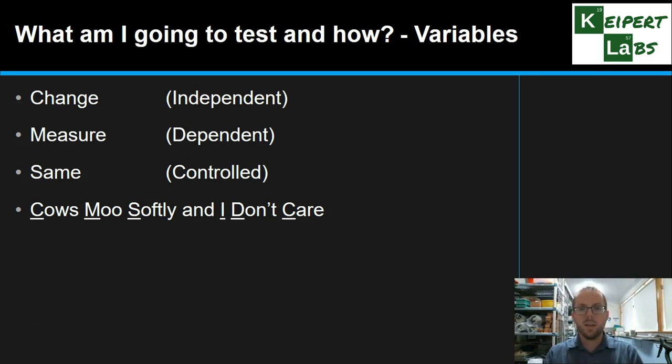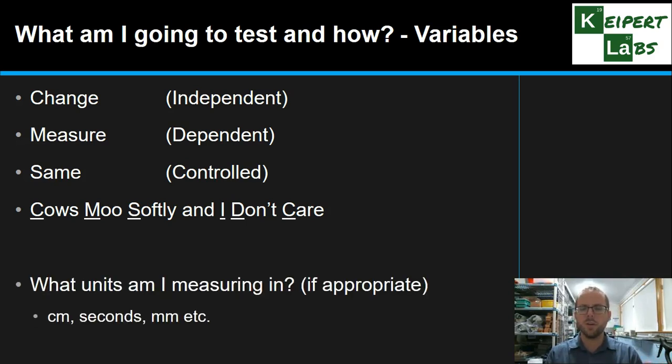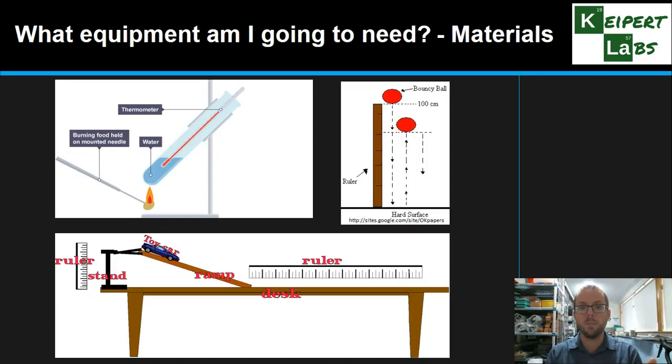And then when we're thinking about our variables, particularly for our changed and measured variables, we've got to think about what units are we measuring in or are we using for that variable. That's not always going to be relevant. Some variables will just be word categories. But other things might involve measuring in centimeters or seconds, millimeters, so there's some property that we're measuring there. Or it might be just a number, one of this, two of this, three of this, four of this.